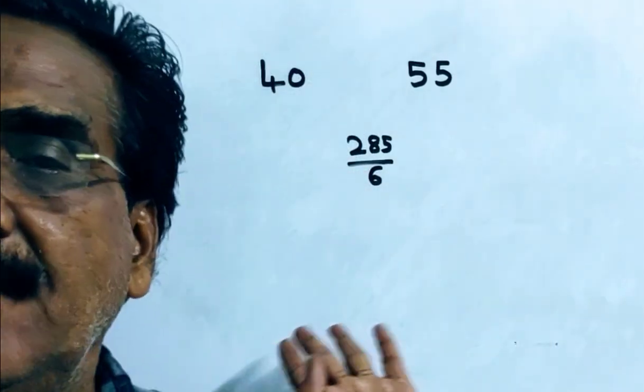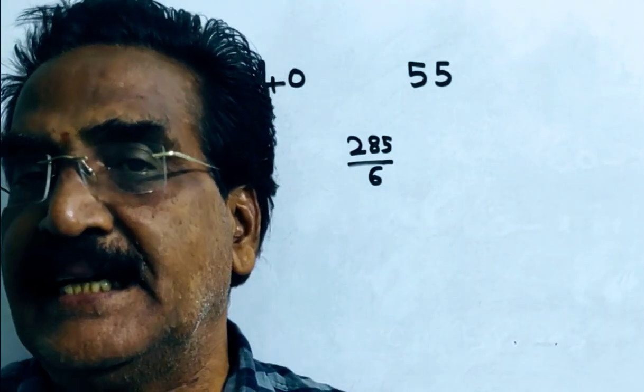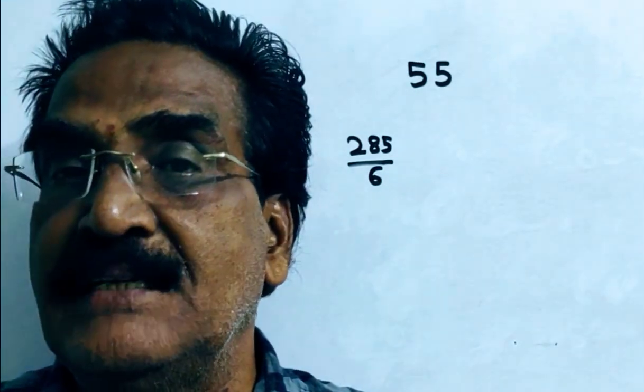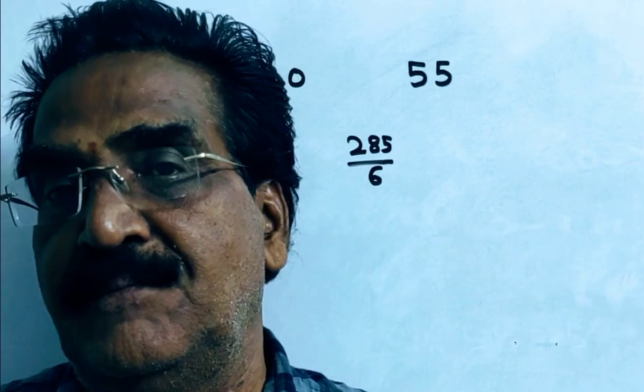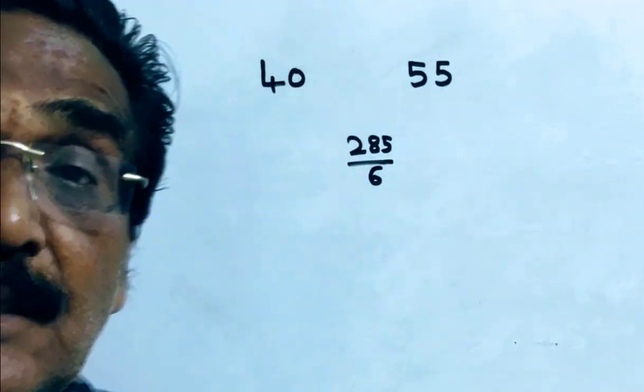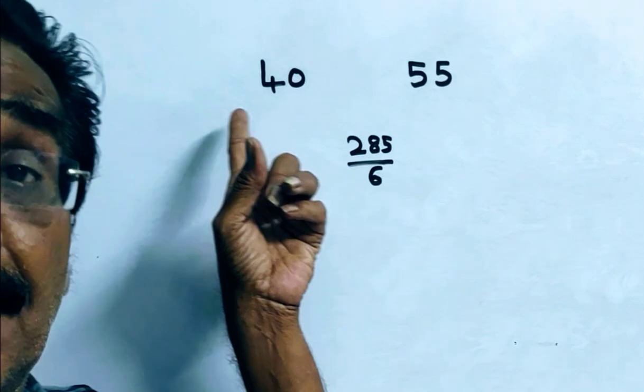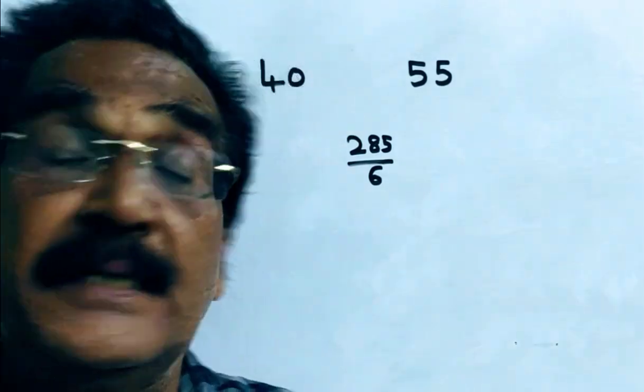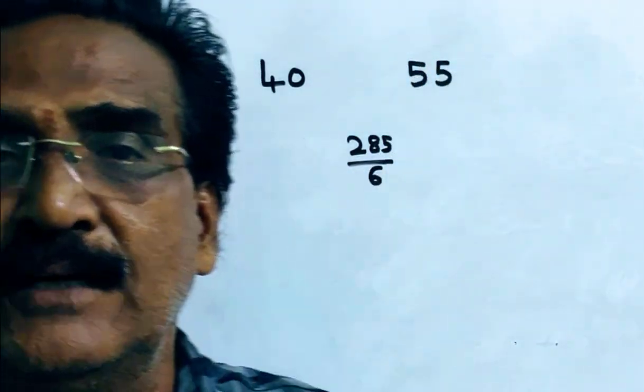This problem can be solved by applying rule of allegations. By applying rule of allegations, we get a ratio. That ratio is the ratio of timings. That means how much time he travelled by bus and how much time he travelled by train.